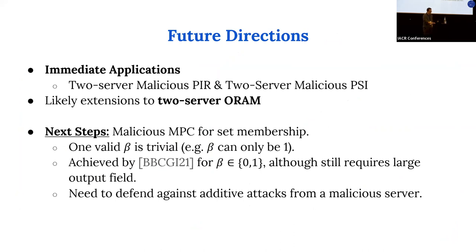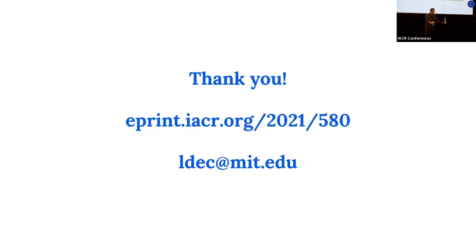To wrap up, this has many immediate applications in the two-server model for malicious PIR and malicious PSI. For next steps, we want to add support for constrained outputs. If there's only one valid beta, this is fairly trivial — you know the shares are non-zero at only one location and can check they are shares of the right value. Otherwise, something more clever is needed to defend against additive attacks from a malicious server.